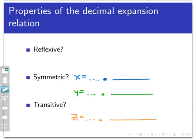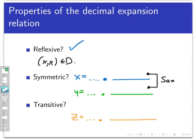Let's check informally to see if this relation satisfies all three important properties. This relation is reflexive because every real number must have the same decimal expansion as itself — so for all x in the real numbers, the pair x, x belongs to d. For symmetry, if x, y is in d, that means x and y have the same decimal expansion. But then y and x will also have the same decimal expansion — the order doesn't matter. So y, x is in d, making the relation symmetric.